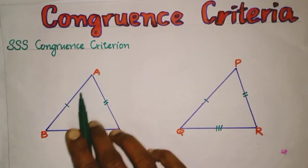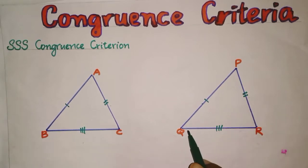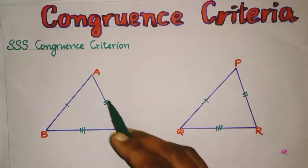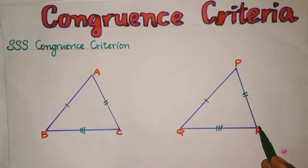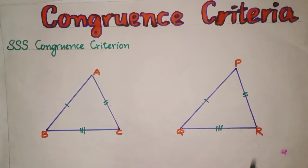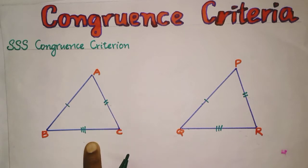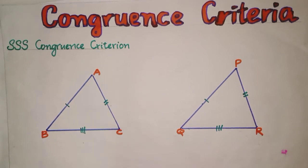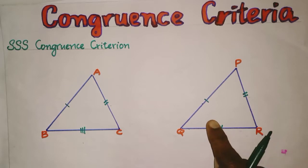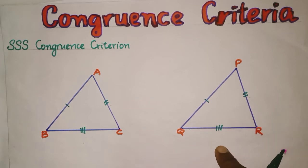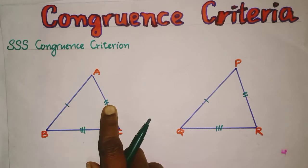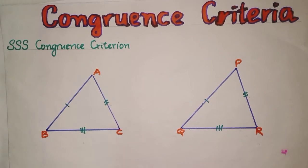Here AB equal to PQ, AC equal to PR and BC equal to QR. That means three sides of triangle ABC are equal to the corresponding three sides of triangle PQR. So this is side-side-side congruency.